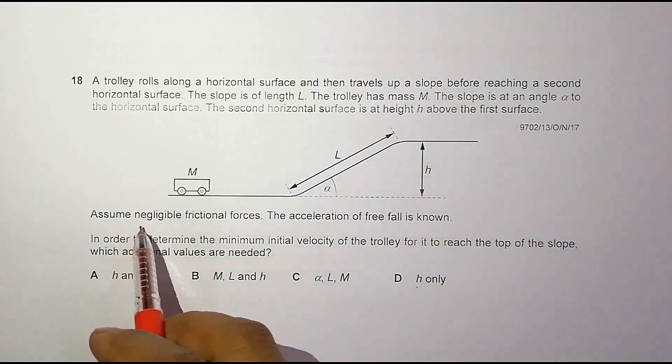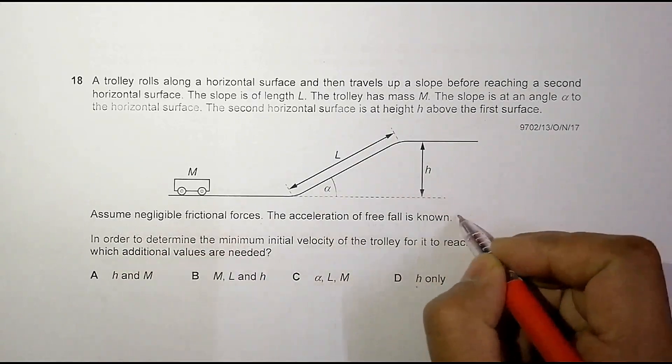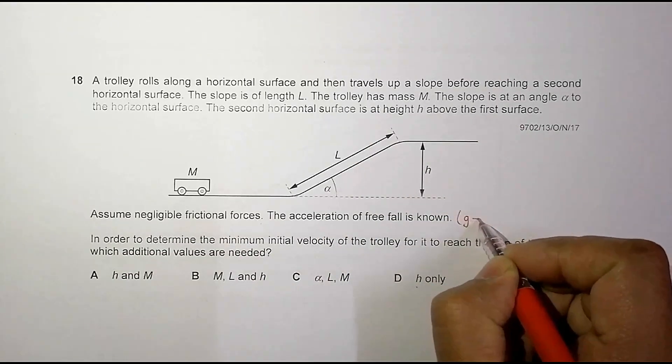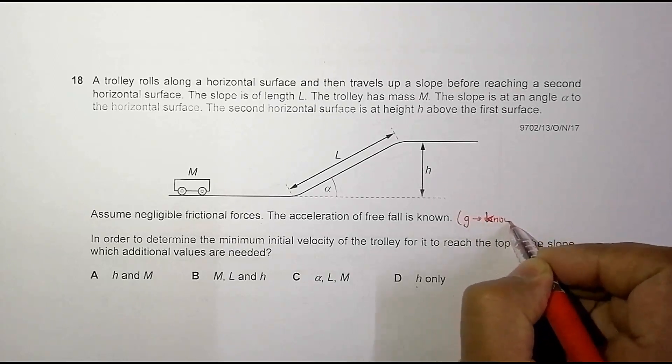We assume that there are negligible frictional forces. The acceleration of free fall is known, meaning G is equal to a known value.